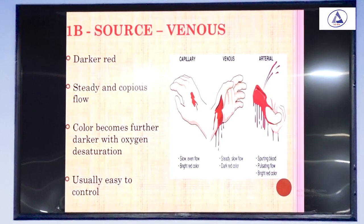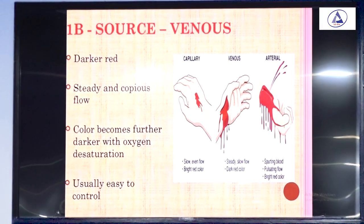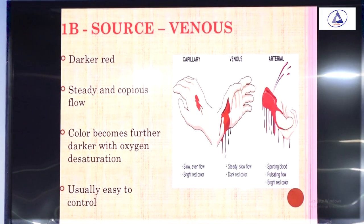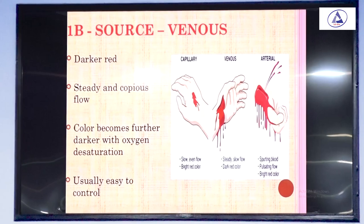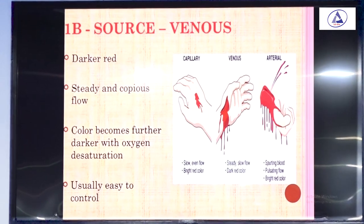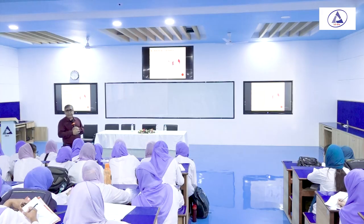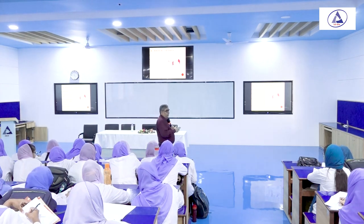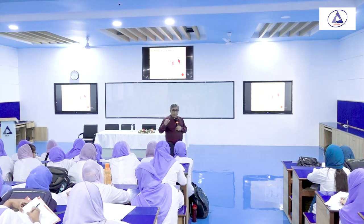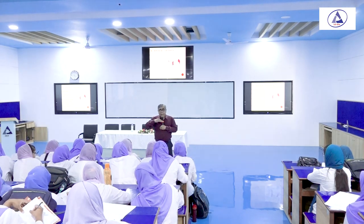Venous blood is easier to control compared to arterial blood. What is the darker red color of venous blood? Venous blood is desaturated blood. So when you see the blood, it will appear darker in color.